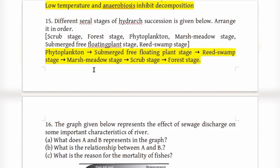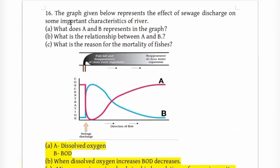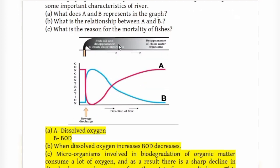In the graph showing the effect of sewage discharge on a river, line A represents dissolved oxygen content and line B represents BOD (Biological Oxygen Demand). The relationship between them is inverse: when dissolved oxygen increases, BOD decreases.